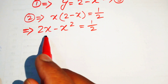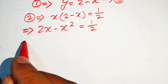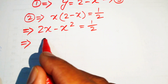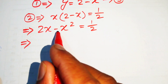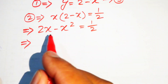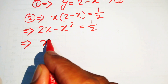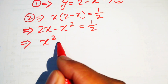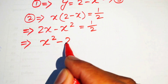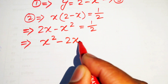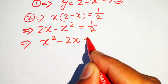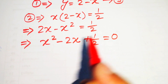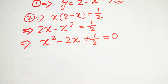Now we move these terms to the right hand side. Moving minus x squared gives plus x squared, and 2x becomes minus 2x, giving us x squared minus 2x plus 1 over 2 equals 0.